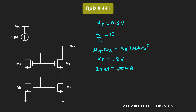Using all these parameters, we can find the minimum required voltage at the output. If we observe this cascode current mirror, M1 and M4 are the diode-connected transistors. Whenever the 100μA current flows through them, the voltage Vgs is generated across their terminals. Since the device parameters for M1 and M4 are equal, the Vgs for both transistors will be equal. So the voltage at this node, Vb, will be equal to 2Vgs.